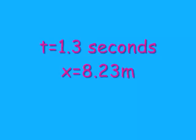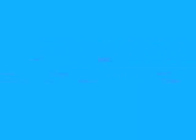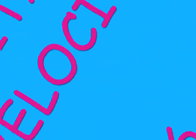For that throw, you know that the shot put was in the air for 1.3 seconds, and it went 8.3 meters. Now, you have to plug that information into the equation: delta x is equal to V₀T plus one-half AT squared. The acceleration cancels out, because overall on the x-axis the acceleration is zero, and you get your initial velocity to be 4.86 meters per second.